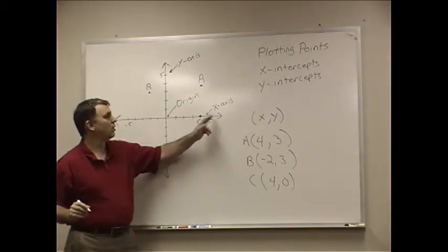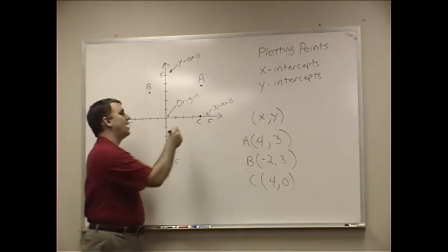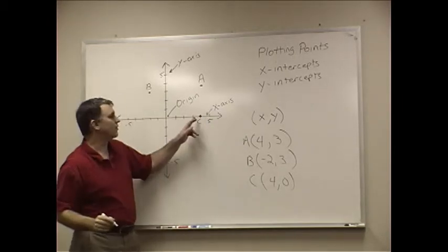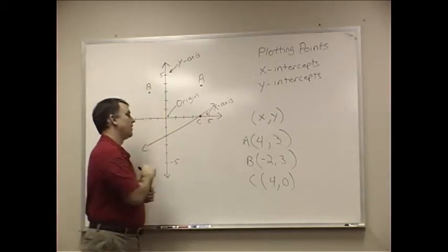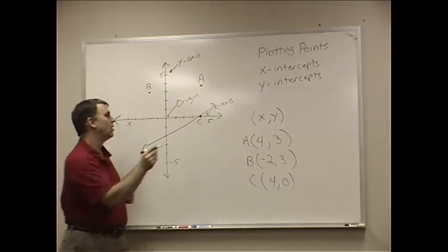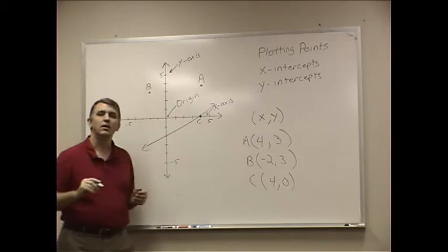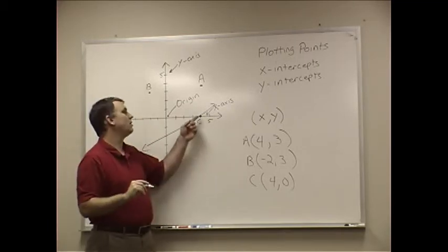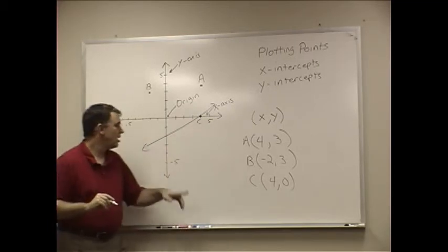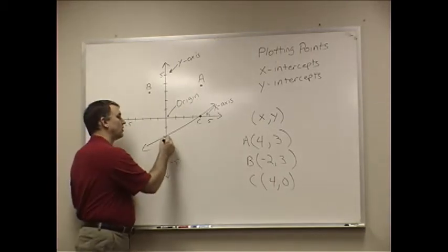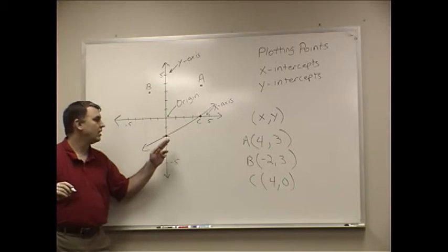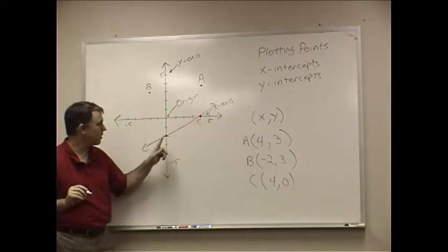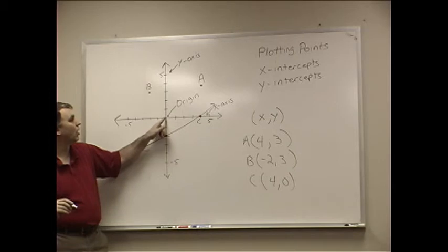Now, when a point is on the x-axis and it happens to be part of a line, and let's say that that is our line right there, this is also called an intercept. That would be the x-intercept. If we want to look at the y-intercept, hey, where does this line intercept the y-axis?